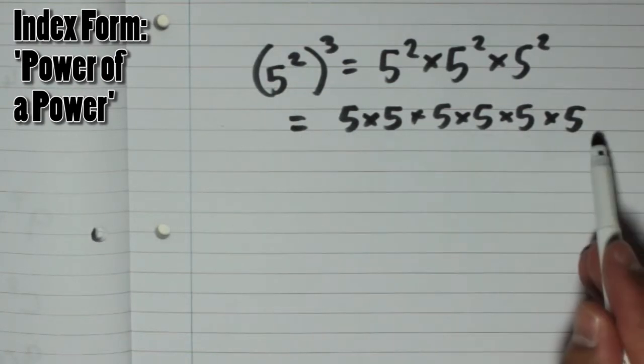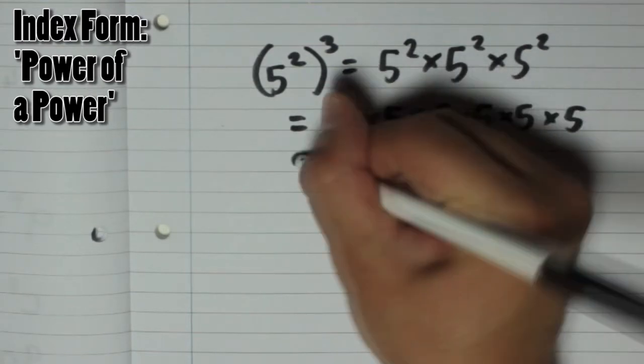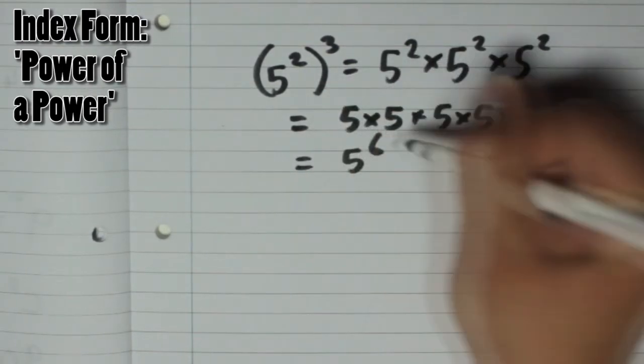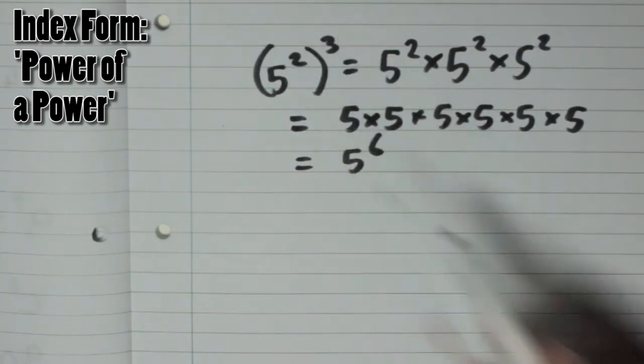So overall, in index form, you've got 1, 2, 3, 4, 5, 6 of them, so it is 5 to the power of 6. So what have you done to 2 and 3 to get 6? You've multiplied them.